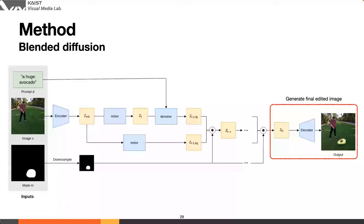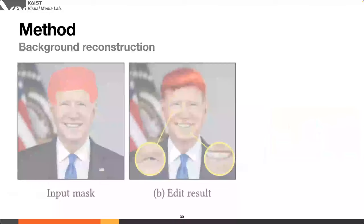Q&A: Would 'avocado' vs 'a huge avocado' produce different results? Yes, definitely different images. Also, using different noise samples leads to different outputs — the text prompt isn't always strictly reflected; you might ask for a huge avocado but get a small one depending on the random noise injected into the diffusion process.